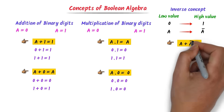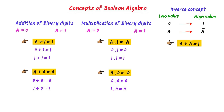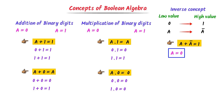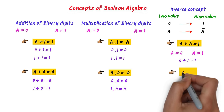First rule: a plus a-bar equals 1. Let a equal 0; then a-bar equals 1 because the opposite value of 0 is 1. So 1 plus 0 is equal to 1. Hence, a plus a-bar equals 1.